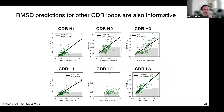When we look at error estimation for other CDR loops, we see similar informative trends across all loops. One exception is CDRL2, where most predictions are already sub-angstrom, so there's limited range — with one outlier the model thought would be accurate but wasn't.